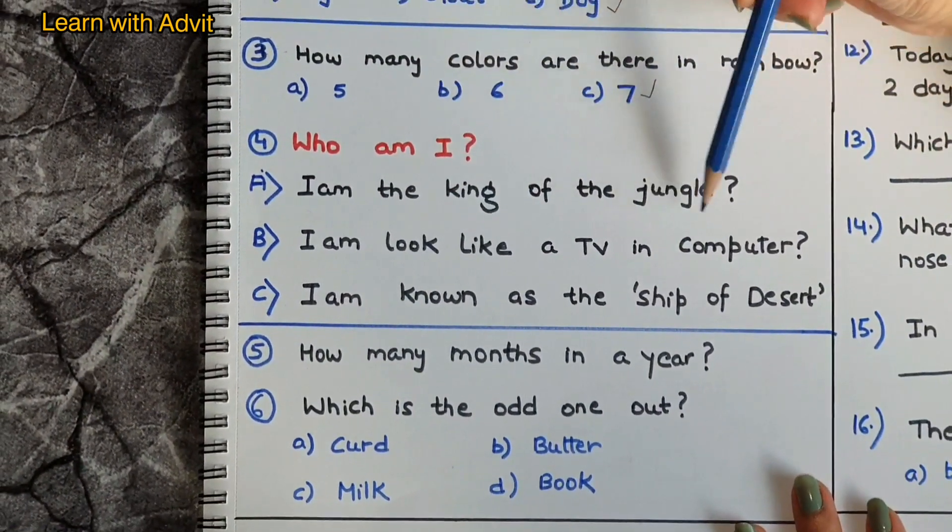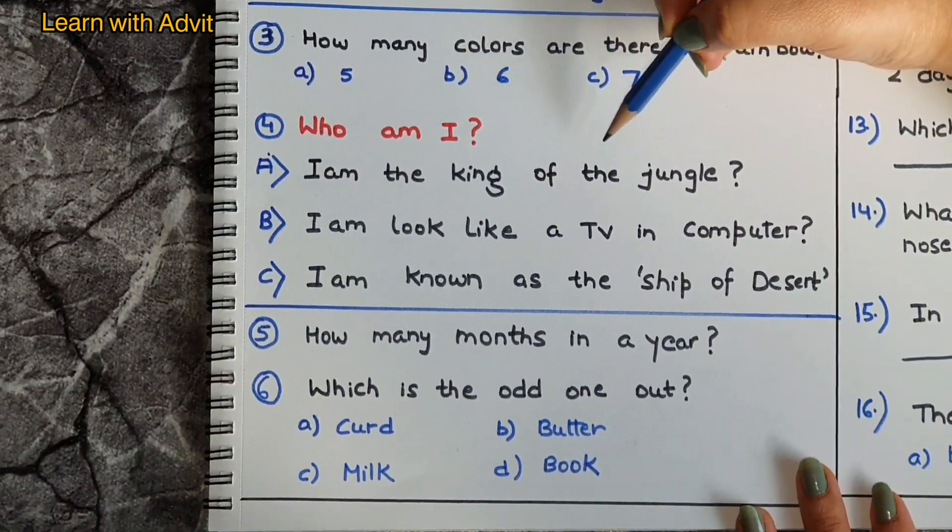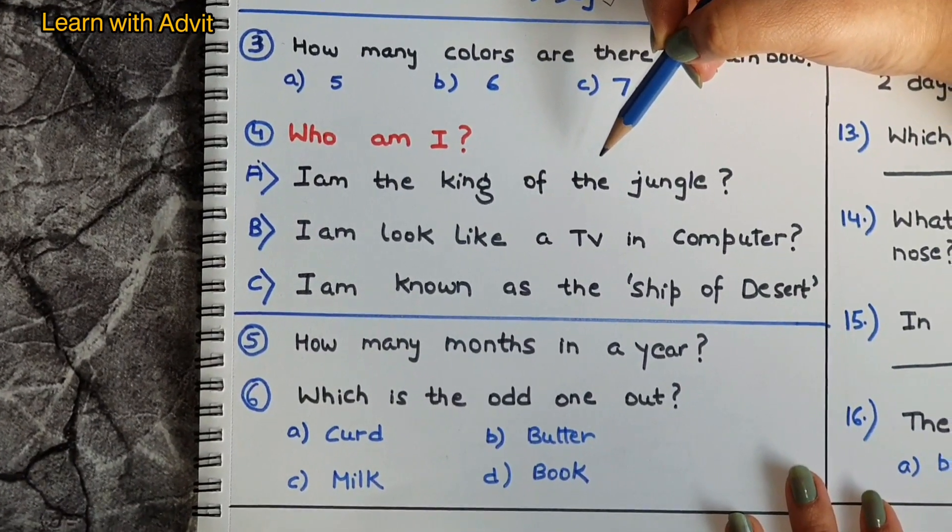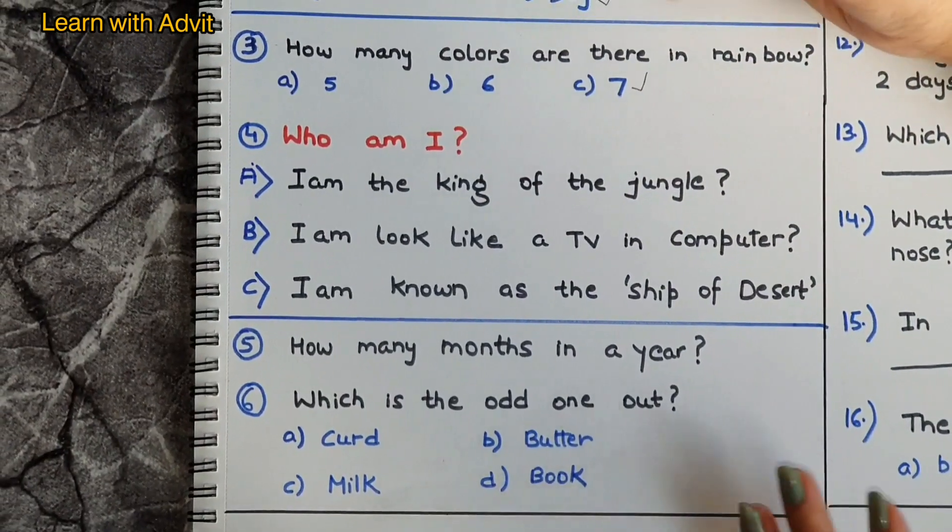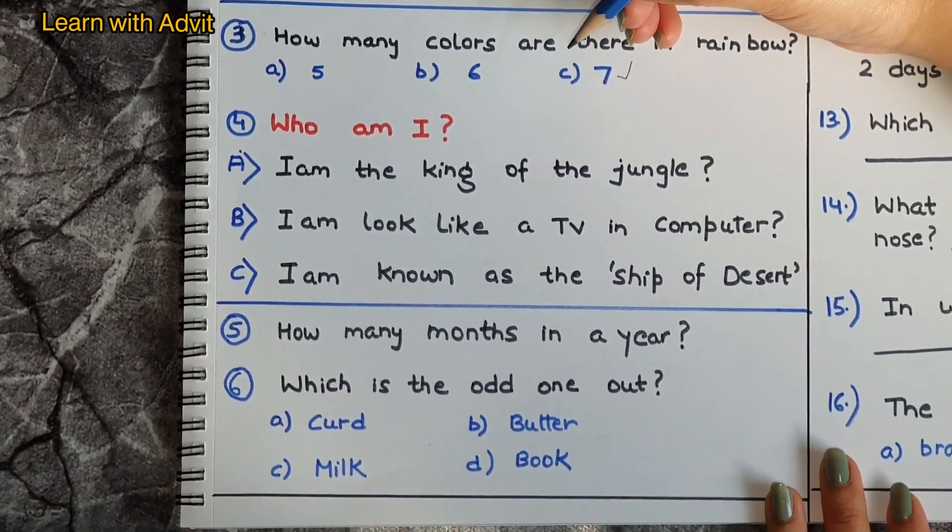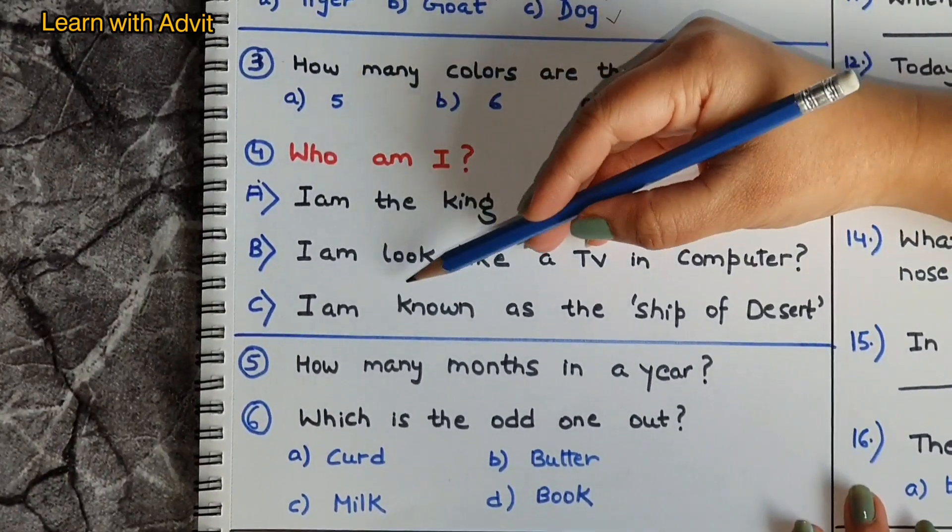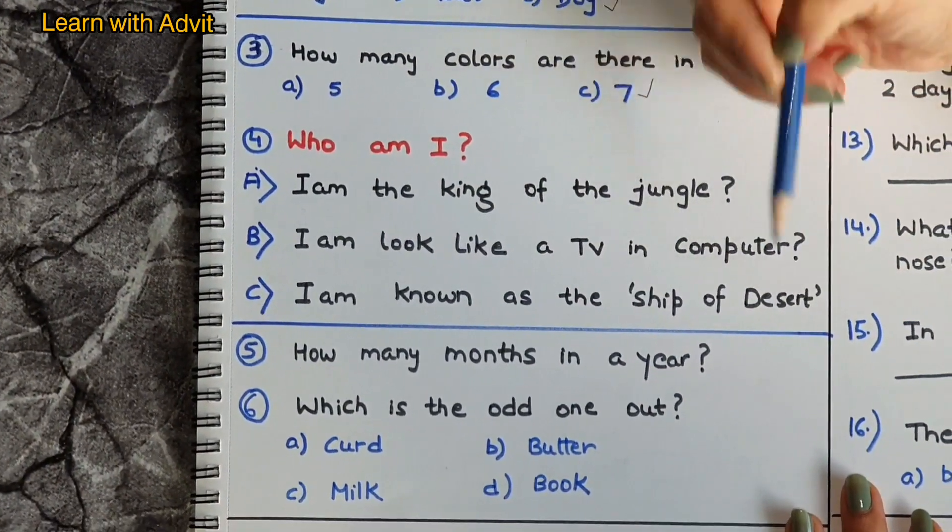I am the king of the jungle. Which animal is the king of the jungle? Lion, very good. I am looked like a TV in computer. Which part? Monitor, very good.